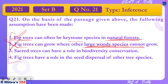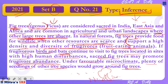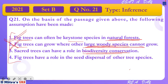Assumption 3: 'Sacred trees can have a role in biodiversity conservation.' Passage mein bahut saare instances diye hue hain. Clearly likha hua hai: it supports a high density and diversity of frugivores, provides food to wildlife, and under favorable conditions other tree species bhi uske aas paas paaye jaate hain. So basically the fig tree is promoting biodiversity in more ways than one. We will go by the third assumption.